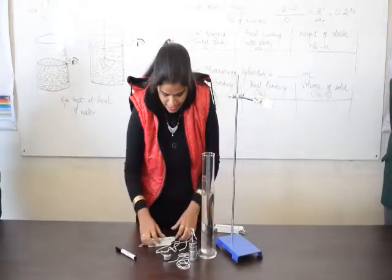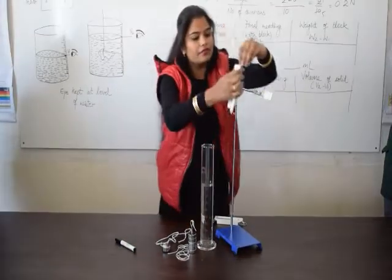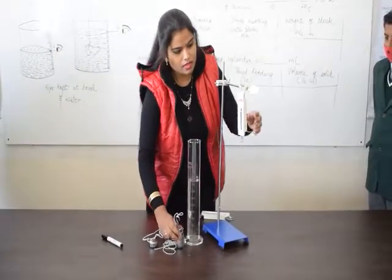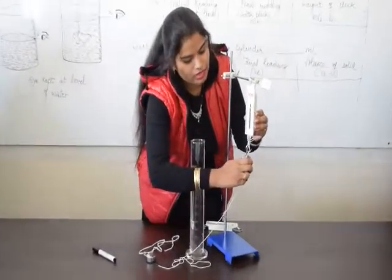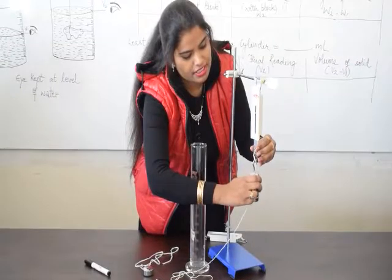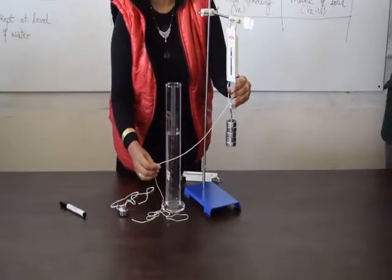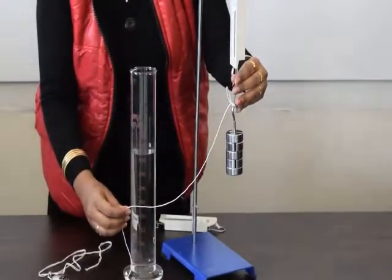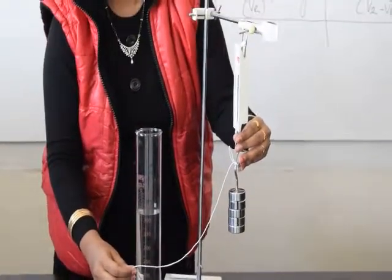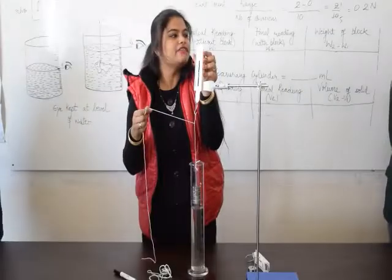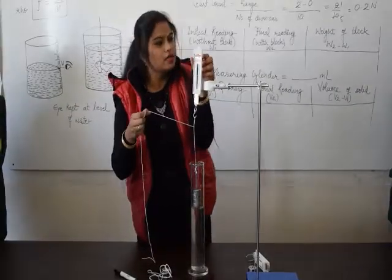Now let us start the experiment. First of all we will hang this spring balance and we will calculate the weight. Initial it is zero. And final, no doubt of reading? No. Can you tell me Harshika? Readings? Ma'am 4 Newton and 400 gram. Okay. 400 gram or 4 Newton.